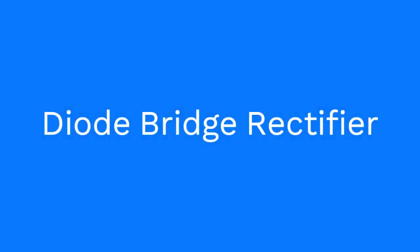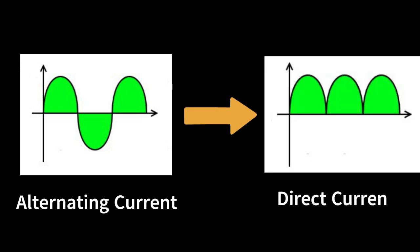A diode bridge rectifier is an electronic circuit that is used to convert an alternating current, AC, into a direct current, DC.